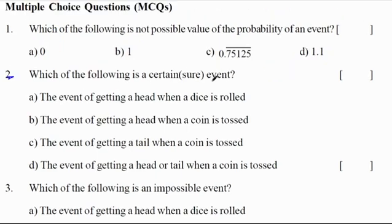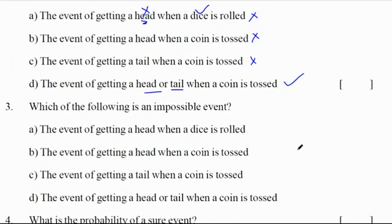Which of the following is a certain or sure event? Getting a head when dice is thrown - when we throw dice we get 1, 2, 3, 4, 5, 6, not heads, so wrong. Getting a head when a coin is tossed - you may get tails also, we can't say. Getting a tail when a coin is tossed - you may get head also. Getting a head or tail - this is a compulsory event, certain or sure event. Correct option is D.